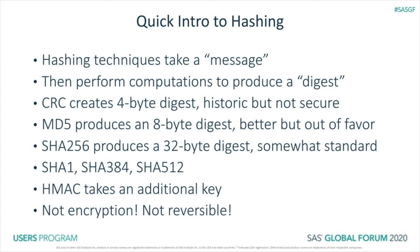Hashing techniques take a message, a stream of data, text, or whatever it may be — any kind of data of any kind of length — and then perform computations and create what is known as a digest, reducing it down to a small size. Various hashing techniques have included the legacy Cyclical Redundancy Check CRC, which creates a four-byte digest. It's been around for a long time, but not terribly secure.